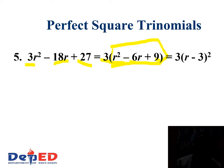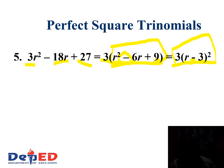Is the first term a perfect square? Yes — r², the square root is r. How about the last term, 9? Is 9 a perfect square? Yes, the square root is 3. And the sign of the middle term is negative, so write negative here. Therefore, r² minus 6r plus 9 is a perfect square, and the factors are (r minus 3) squared. The final answer is 3 times (r minus 3) raised to the second power.